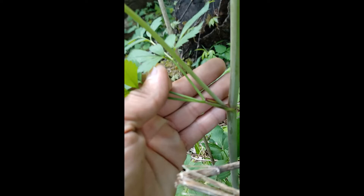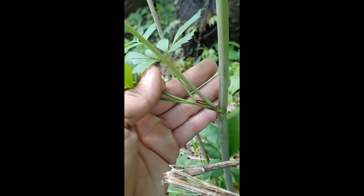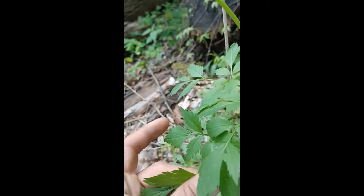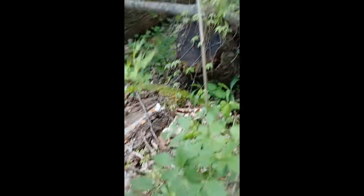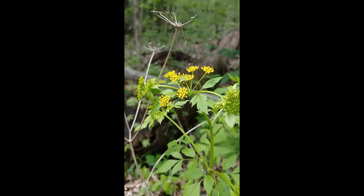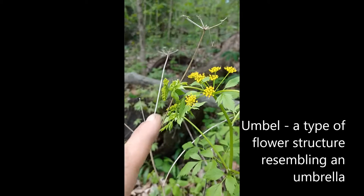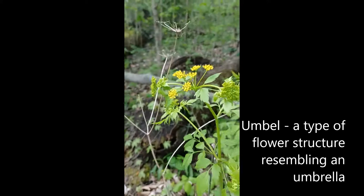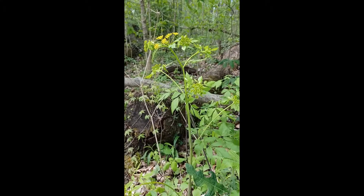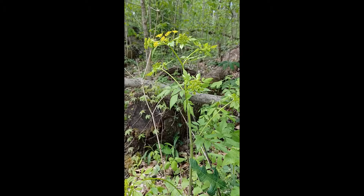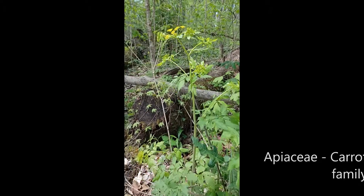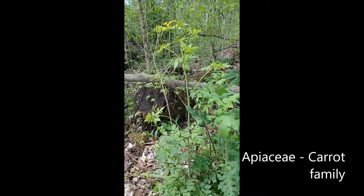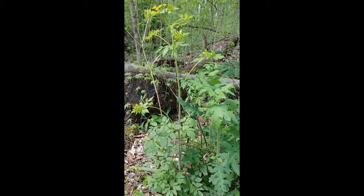The flowers are in this umbel — it's actually small umbels of umbels, so this is an umbelliform, which is often characteristic of the carrot family of plants. This is in the Apiaceae family.